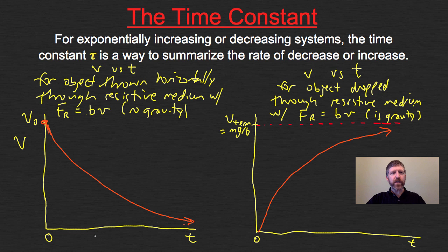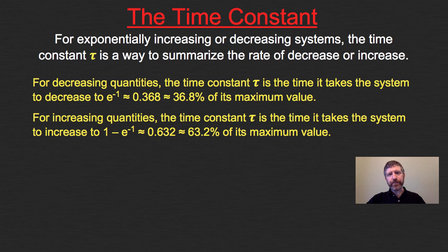So we use what is called the time constant. For decreasing quantities, much like the velocity when you throw something horizontally through a resistive medium, the time constant tau is the time it takes the system to decrease to 36.8% of its maximum value. That happens to be e^(-1). For increasing quantities, it's the time it takes the system to get to 1 - e^(-1), or 63.2% of its maximum value.